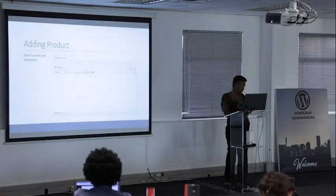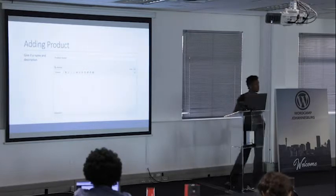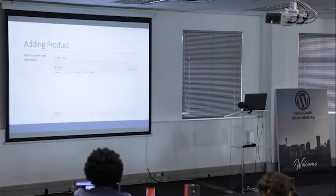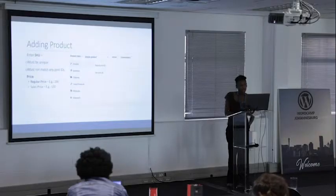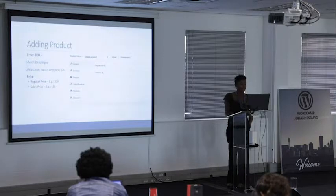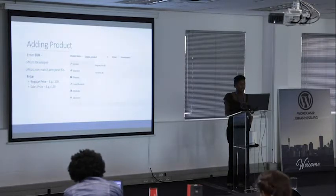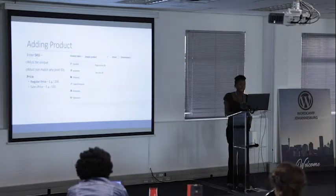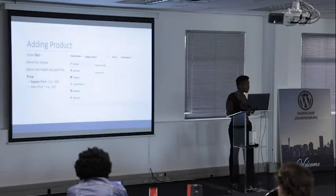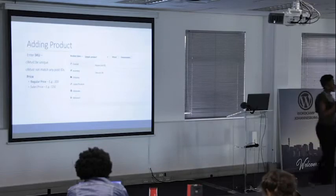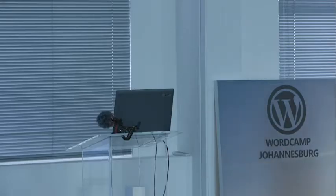Now that we've started creating our product, we get to the product page. We can give it a name and a long description. On the General tab we can enter the price — the regular price is your normal item price, and the sale price is the price shown when the item is on sale. Next to this there's a 'Schedule' link where you can decide when the sale starts and when it ends.